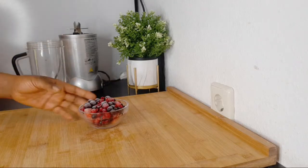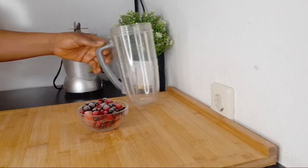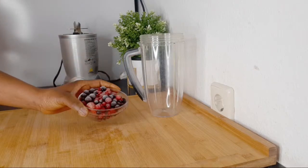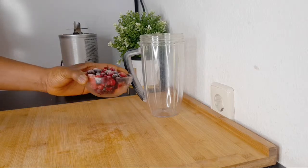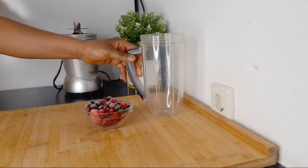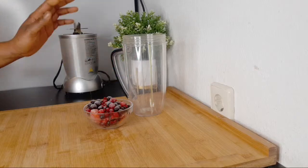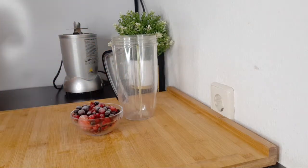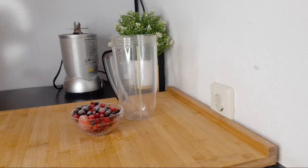The first ingredient we have here is berries - different kinds of mixed berries, about one cup. Here I have my blender that we're going to be using for today's recipe.